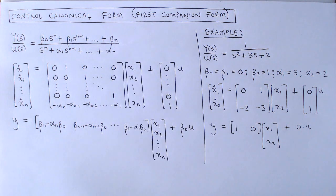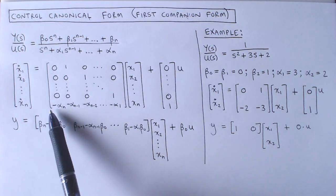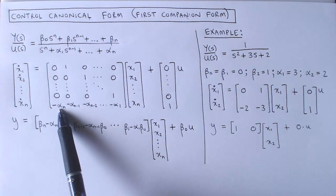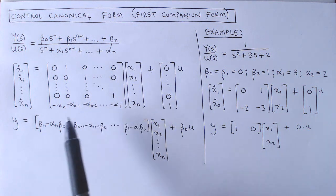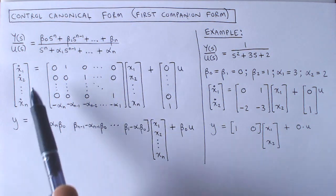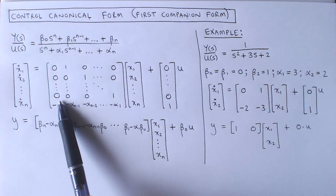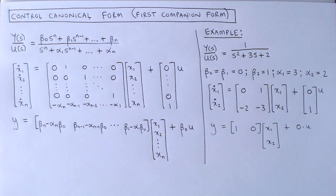For the control canonical form, we choose the states such that in the A matrix, the bottom row contains the coefficients alpha n to alpha 1, preceded by minus signs. The rest of the left column of the A matrix contains zeros, and the top right block of the A matrix is an identity matrix.